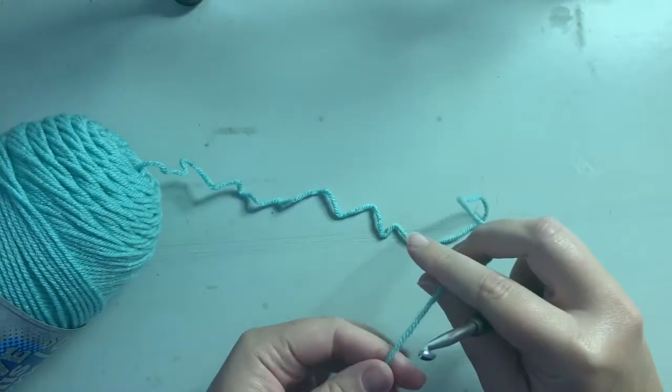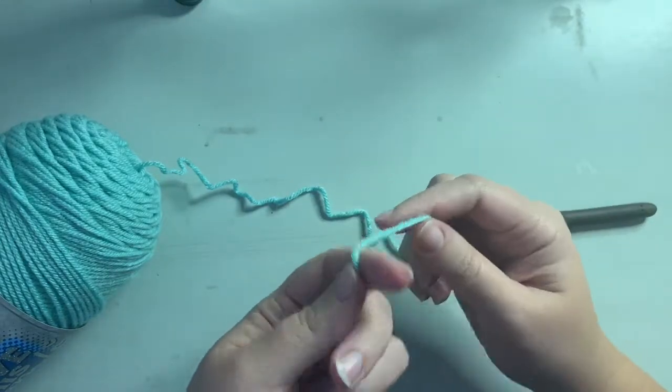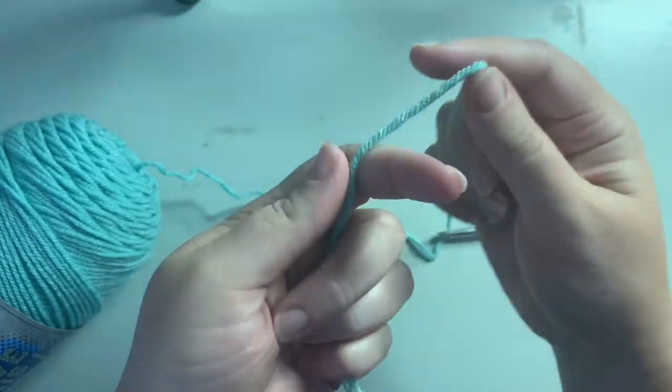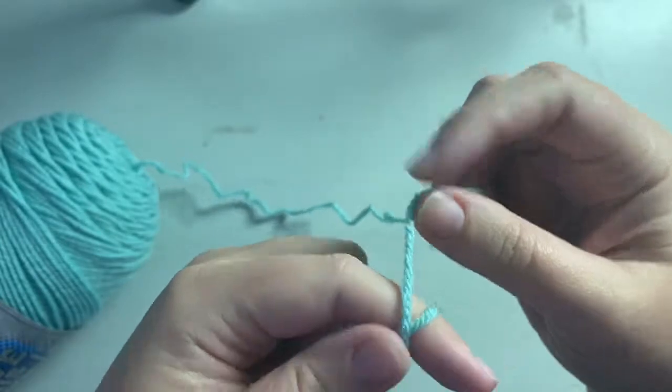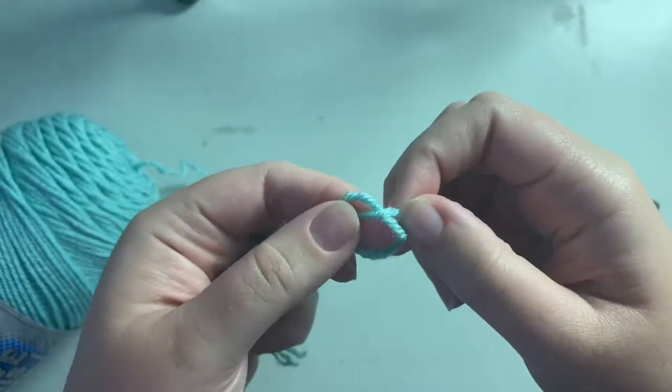The very first thing that you need to know how to do is make a slipknot. The easiest way that I found to do this is to hold the tail in your hand, take the yarn, wrap it around your finger all the way around, pop it off your finger, push the rest of that tail through, pull it tight. Pretty easy.